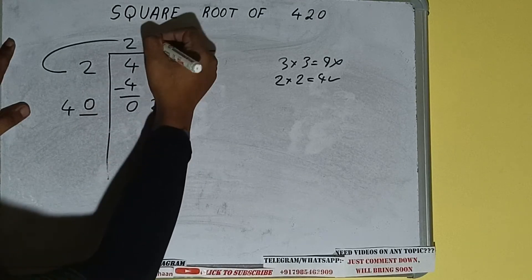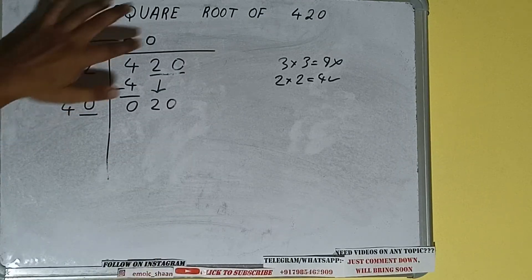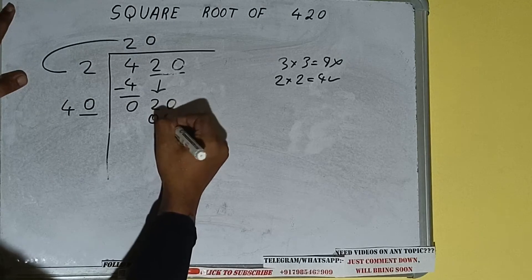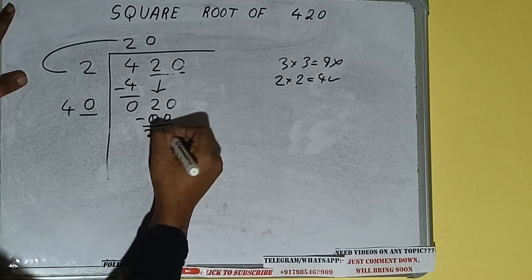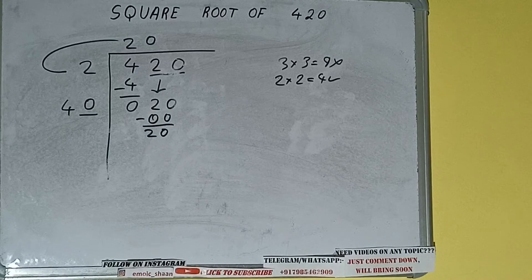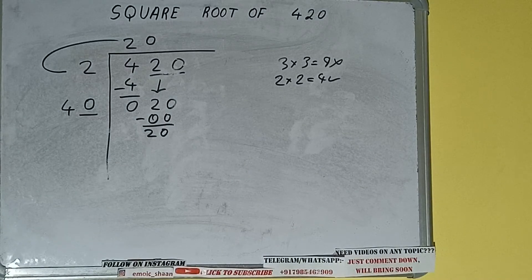Now whatever number we write here, we have to write here also. So 0 here and 0 here. 0 subtract, 20 will be left. Now 40 into 0, so add both. 40 plus 0 will be once again 40.